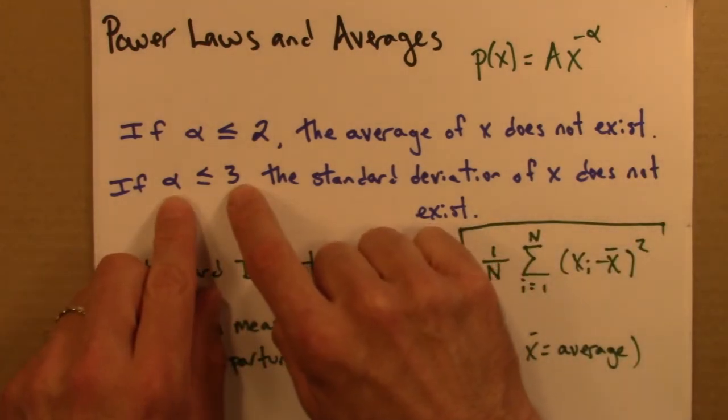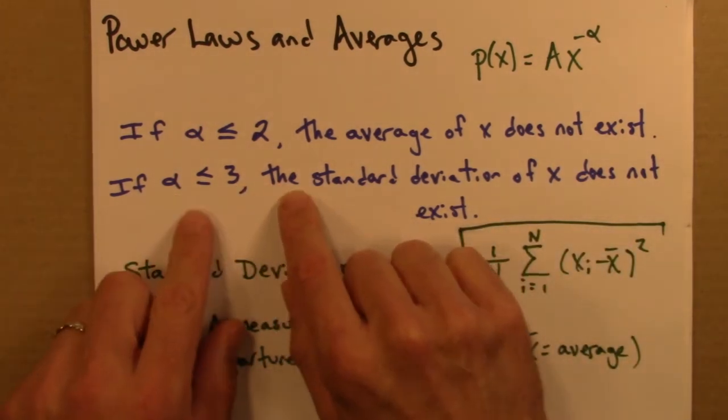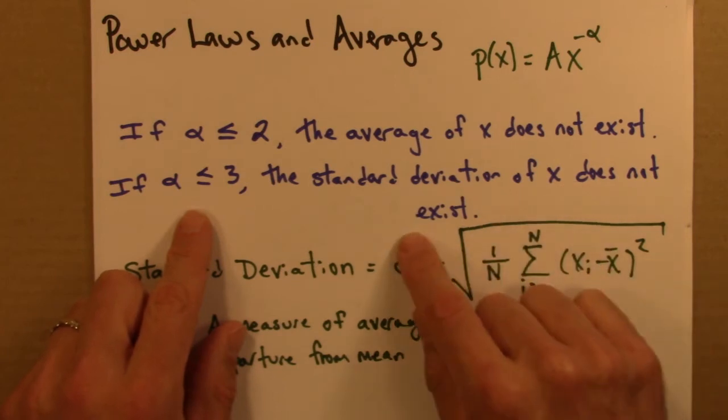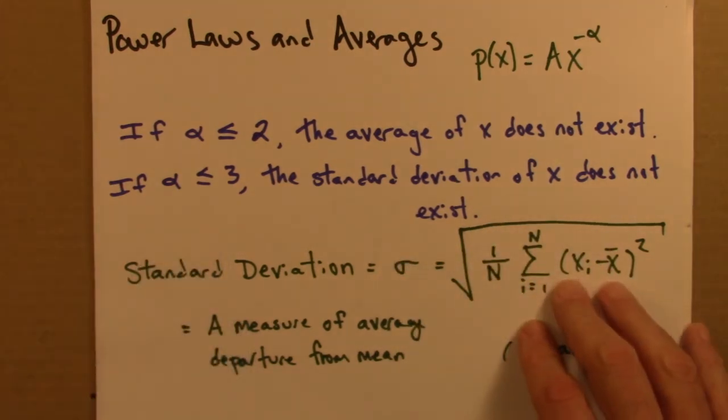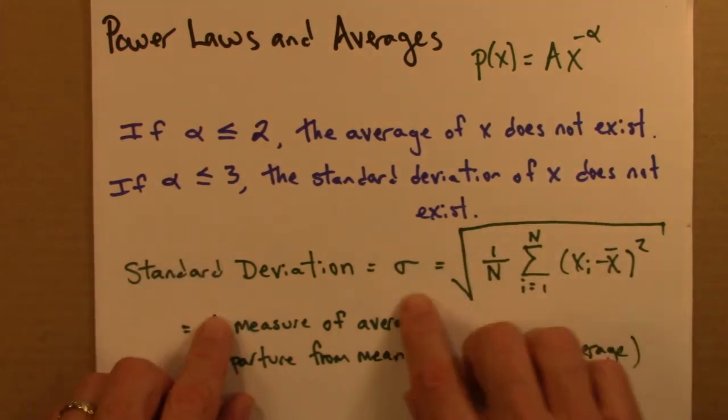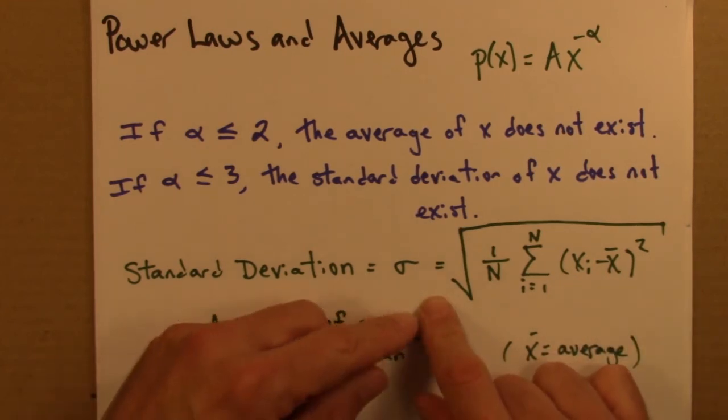If alpha is less than 3, then the standard deviation of x does not exist. And let me say briefly what standard deviation is. Here is its definition, and it's defined as follows.